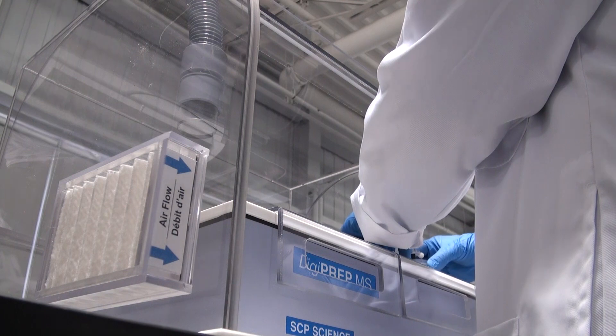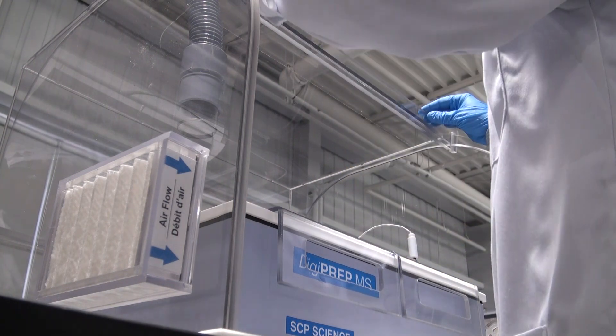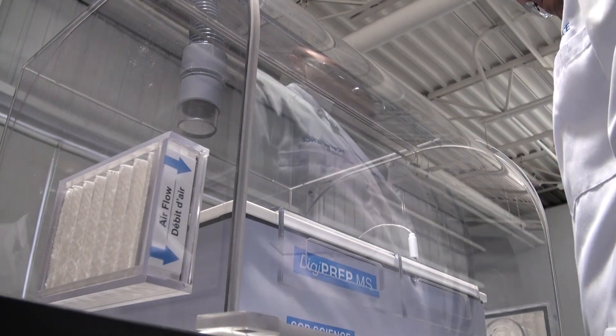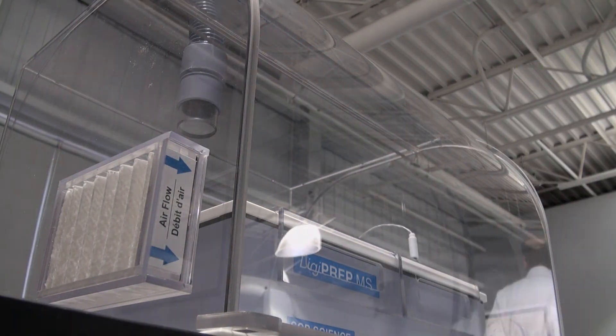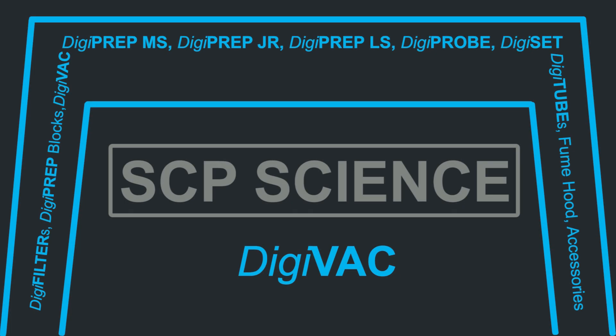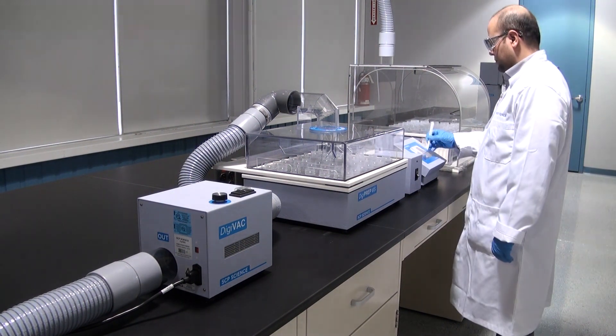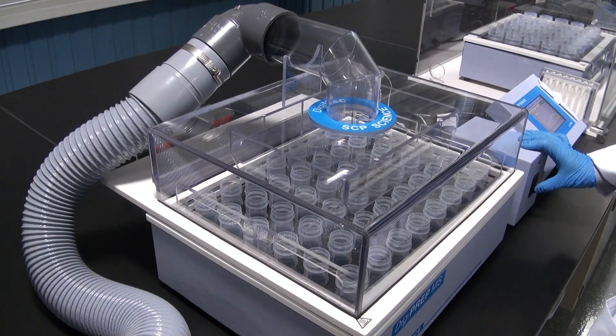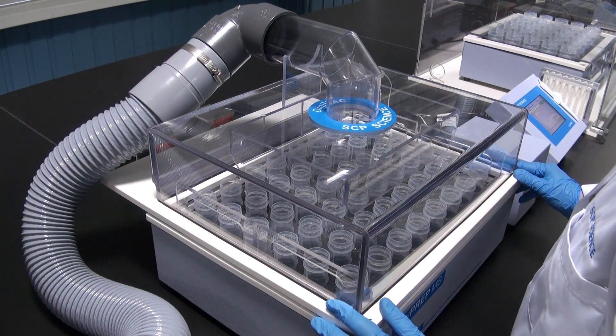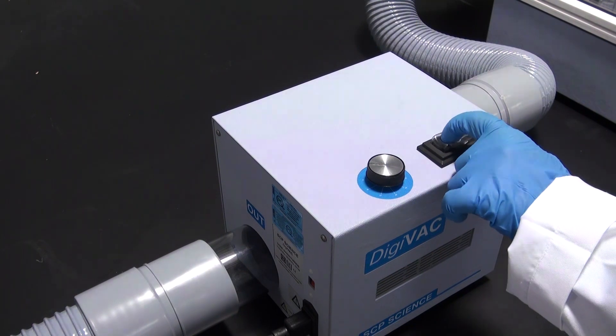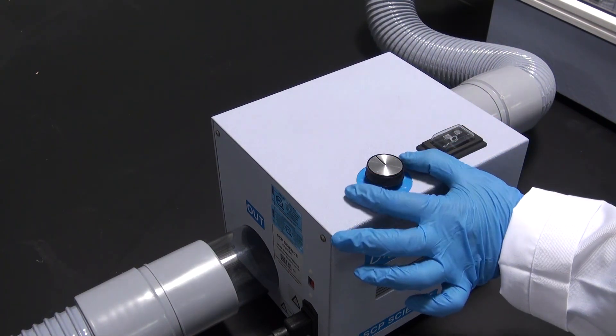Seen here is a Digiprep block for use with 100ml Digitubes. Digivac brings digestions outside of the Fume hood. Digivac helps to provide uniform evaporation rates across all samples, and allows the user to easily observe sample digestions through a transparent collection hood.